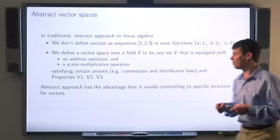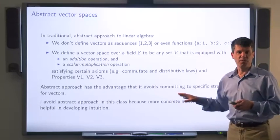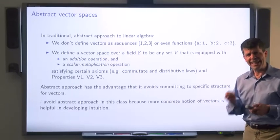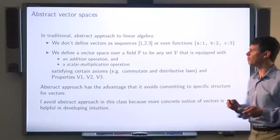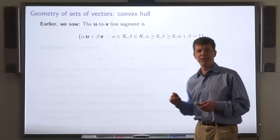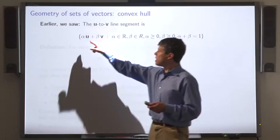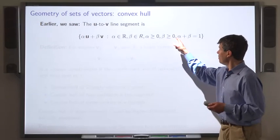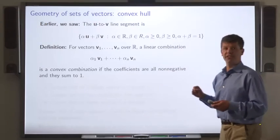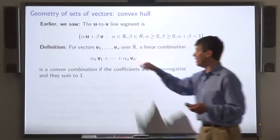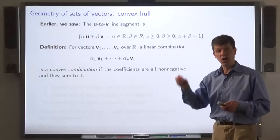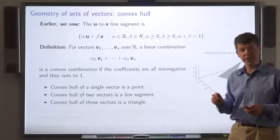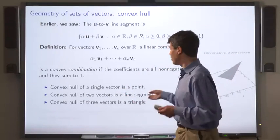We saw earlier that the u-to-v line segment can be represented as the set of linear combinations alpha·u + beta·v where alpha and beta are non-negative and sum to 1. A linear combination of vectors v1 through vn is called a convex combination if the coefficients are all non-negative and sum to 1. The convex hull of a single vector is a point, the convex hull of two vectors is generally a line segment, and the convex hull of three vectors is a triangle.